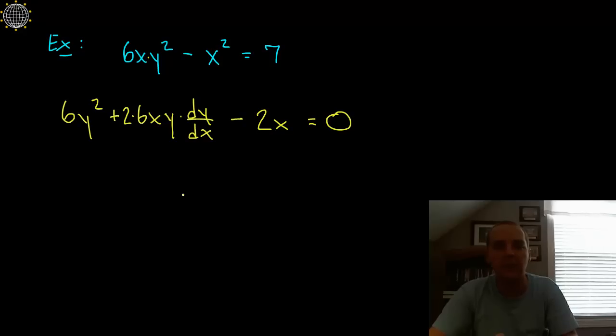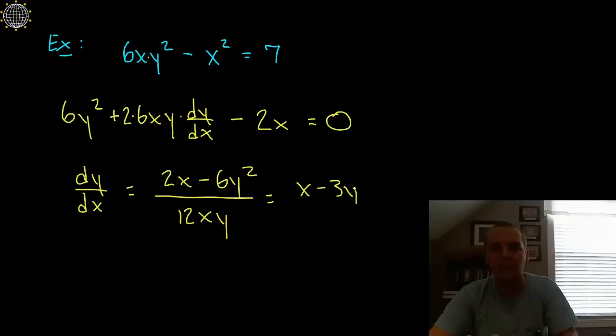A little algebra we can solve for dy/dx. To solve for dy/dx you'd add the 2x and subtract the 6y squared, and then we would divide by the 12xy. So there's the first derivative. We could even clean it up a little bit, I see a common factor of 2. You could say (x - 3y²) all over 6xy if we wanted to reduce that fraction by 2, but in any case we want to move beyond that just a little bit farther.